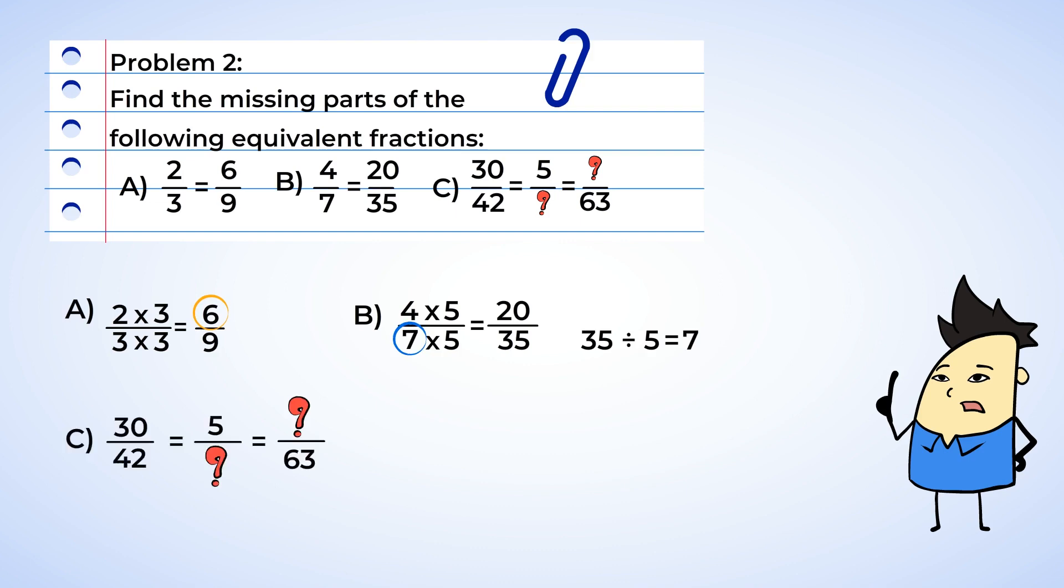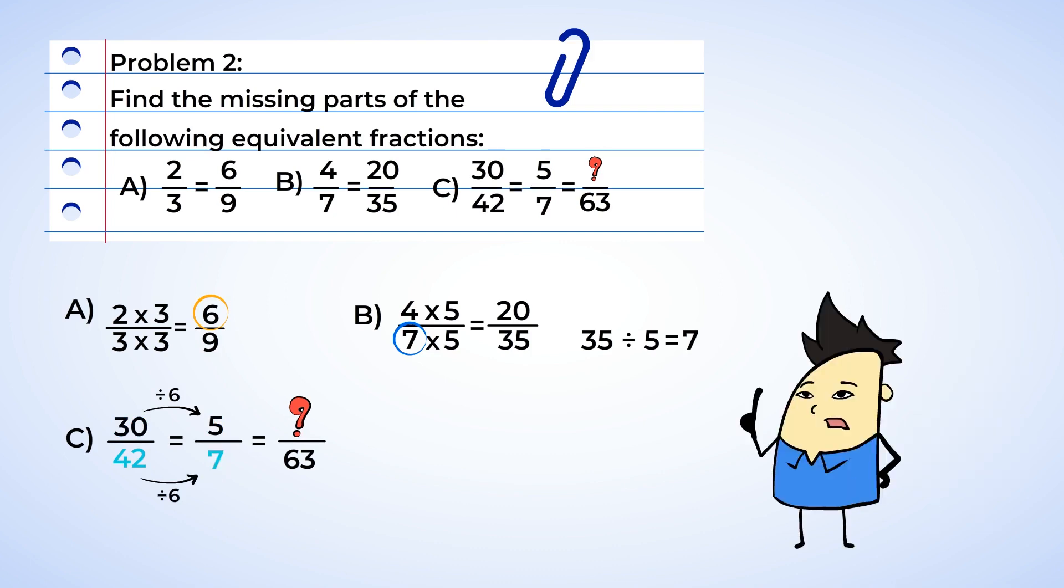Okay, next up, part C. Whoa. This one has two unknown numbers. Well, looking at the numerators, how do we get from thirty to five? Okay, since the numbers get smaller, instead of multiplying, it looks like we're dividing. Thirty divided by six gives us five, and so that means we can divide forty-two by six to find our missing denominator. Forty-two divided by six is seven. All right, we found that the fraction thirty forty-seconds is equal to five-sevenths. But let's pause for a second and think about what we just did. It was the first time we divided a number to make an equivalent fraction.